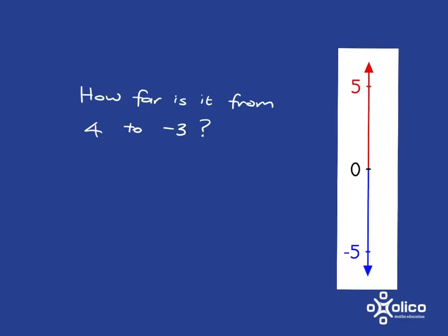Try this one for yourself: how far is it from 4 to negative 3? Pause the video and try it yourself. So 4 would be about here on the number line and negative 3 — negatives are below the 0 — negative 3 would be around there. We can straight away use the idea that from 4 down to 0 is 4 steps and from 0 down to negative 3 is 3 steps. So we've gone 4 steps and 3 steps, and in total we have gone 7 steps.